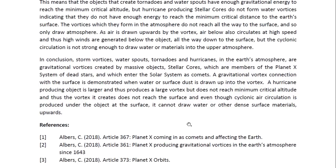In conclusion, storm vortices — water spouts, tornadoes, and hurricanes in the Earth's atmosphere — are gravitational vortices created by massive objects, stellar cores, which are members of the Planet X system of dead stars and which enter the solar system as comets. A gravitational vortex connection with the surface is demonstrated when water or surface dust is drawn up into the vortex. A hurricane-producing object is larger and produces a larger vortex, but does not reach minimum critical altitude, and thus the vortex does not reach the surface. Even though cyclonic air circulation is produced under the object at the surface, it cannot draw water or other dense surface materials upwards.